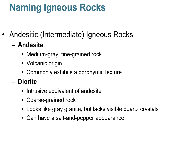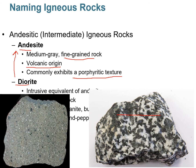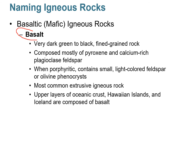Moving on to intermediate composition igneous rocks: andesite is a very common intermediate igneous rock, volcanic in origin. You often find it in the Andes. It commonly exhibits porphyritic texture, has a gray appearance, and is fine-grained or aphanitic. Diorite is the compositional equivalent to andesite but is an intrusive igneous rock, so it's coarse-grained or phaneritic. It looks like granite but lacks visible quartz crystals and can have a salt-and-pepper appearance. Andesite is gray and very fine-grained, while diorite shows the intermediate composition of roughly half dark silicates and half light silicates.